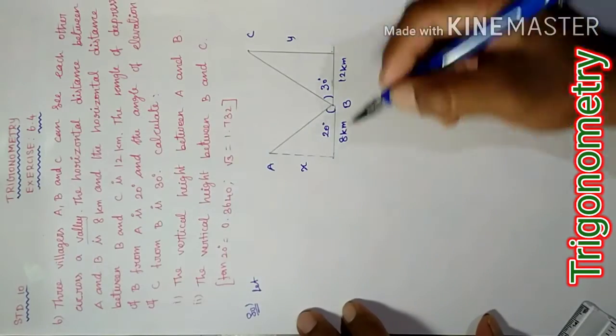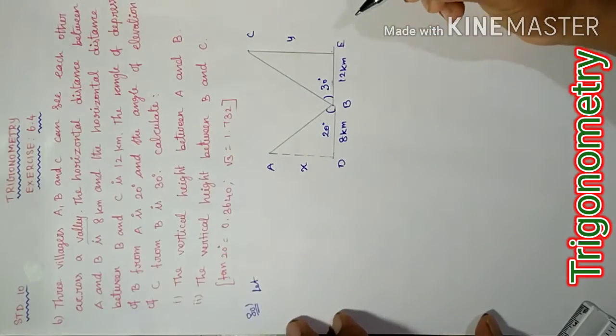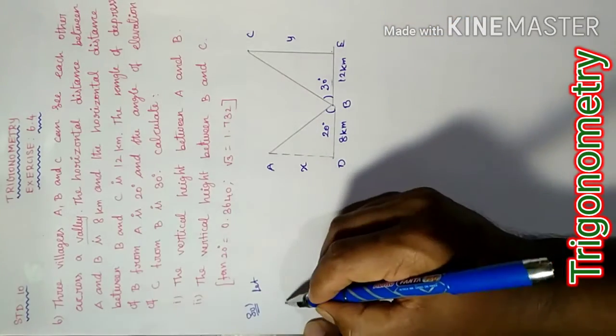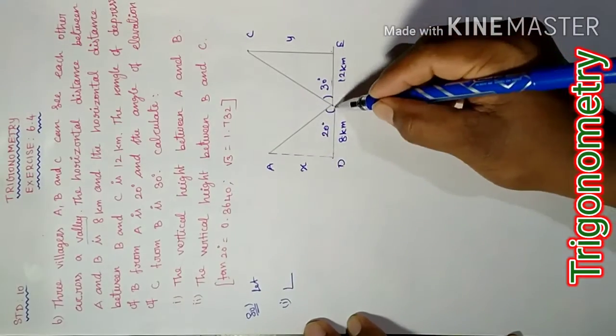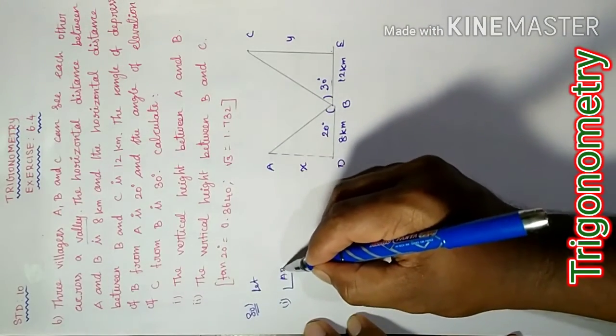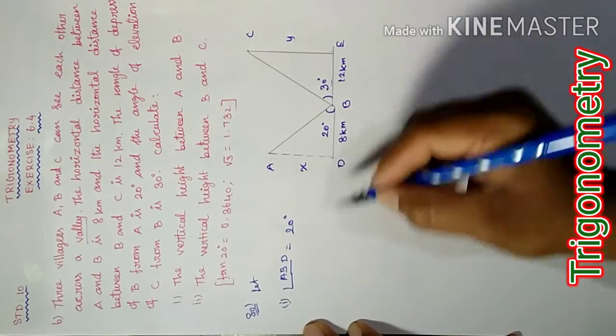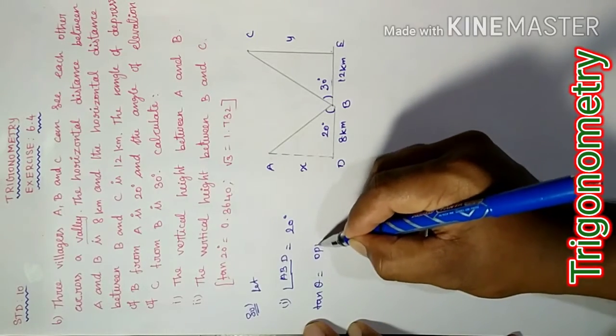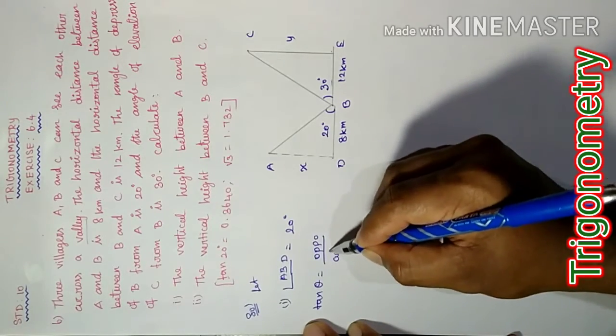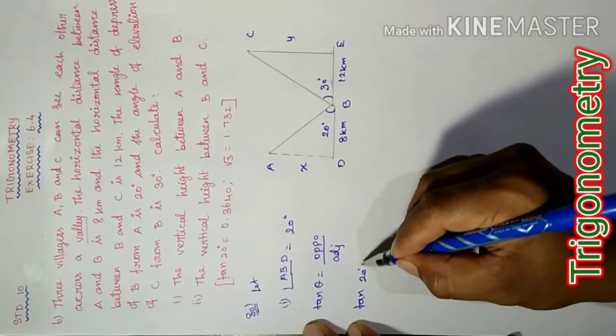Therefore, in triangle ABD, angle ABD equal to 20 degrees. Opposite and adjacent side formula: tan theta equal to opposite side by adjacent side. Tan 20 degrees equal to opposite side x by adjacent side.